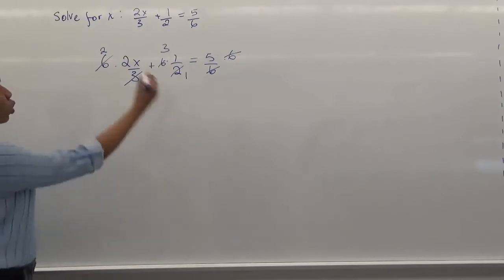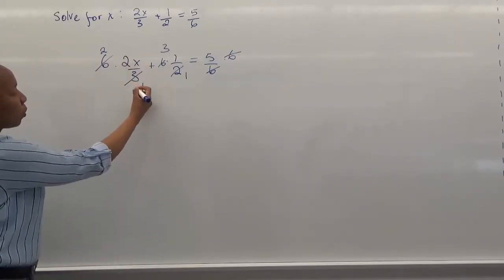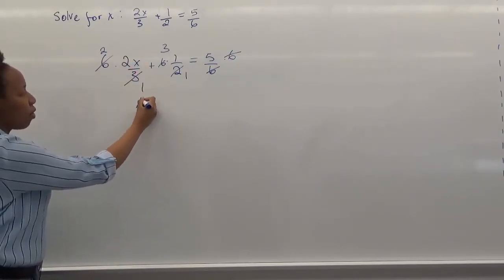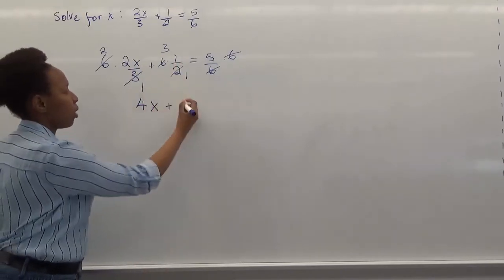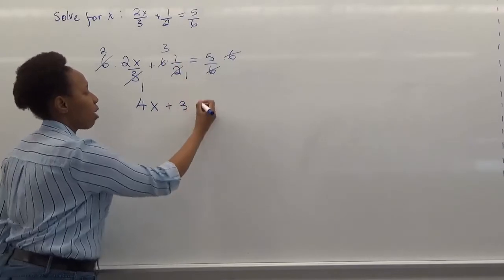So now we have 2 times 2, which is 4, and times x. We have 4x. And then we have 3 plus 3, basically. And then we just have 5.